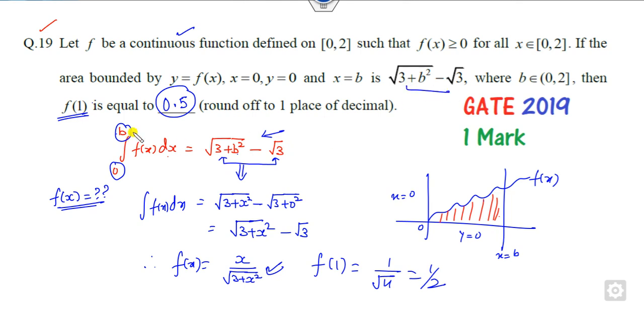That's a very simple way - whatever is given to you with respect to this limit, you'll get this expression. Since this is the integration, you can find f(x) by using the derivative. The right answer is 0.5. This is a simple trick you can apply in the GATE examination. Best of luck students, happy learning.